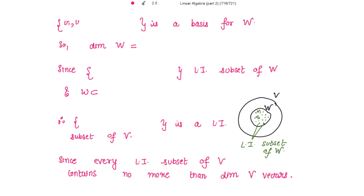So {v1, v2, v3, ..., vn} is the basis for W. The dimension is the number of elements present in the basis, so the dimension of W is equal to n.